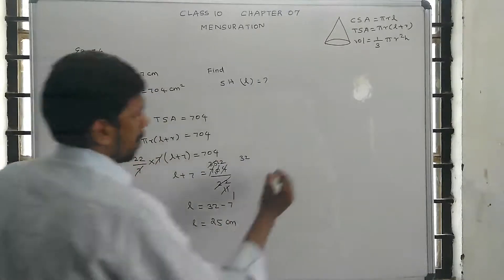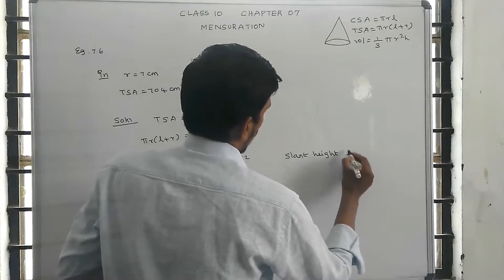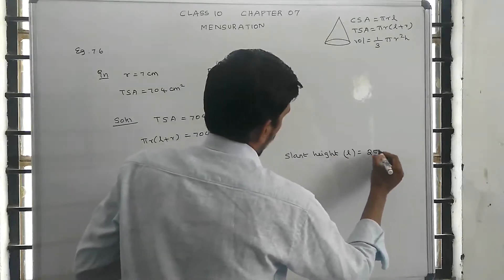So the answer is: slant height l equals 25 centimeters.